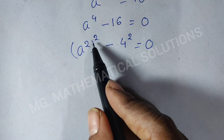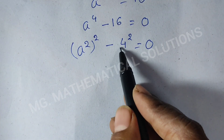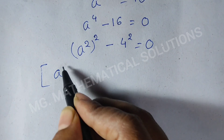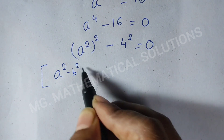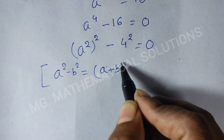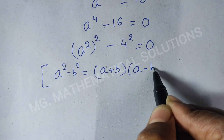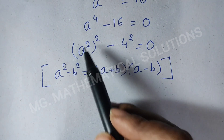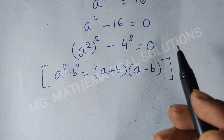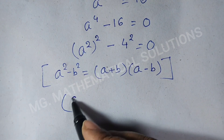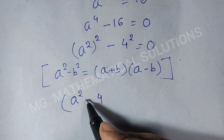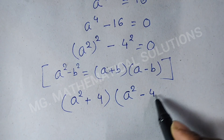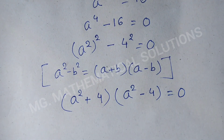Now we use the formula a squared minus b squared equals (a plus b) times (a minus b). Here, a means a squared and b means 4. So, we get (a squared plus 4) times (a squared minus 4) equals 0.